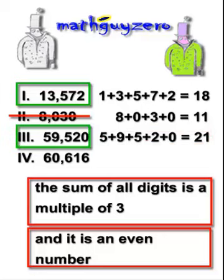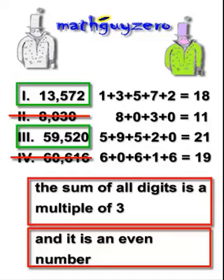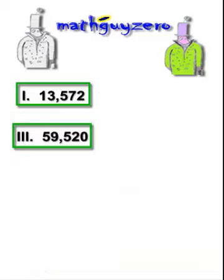The last one: 6 plus 0 plus 6 plus 1 plus 6 is 19. That is not a multiple of 3, so stop right there. So we found the two that are divisible by 6 — it's number 1 and number 3.